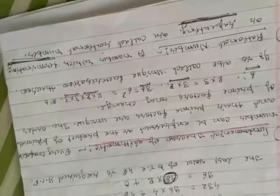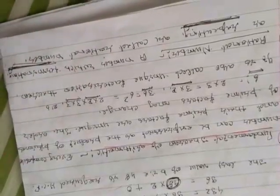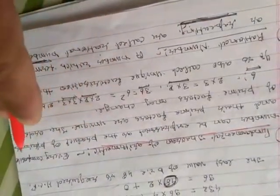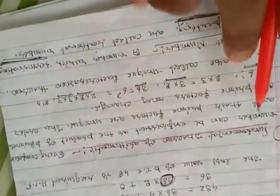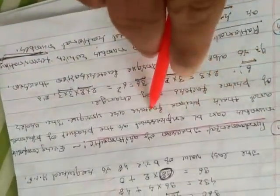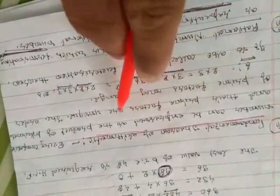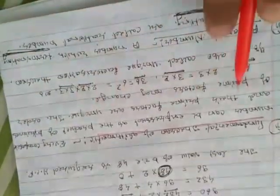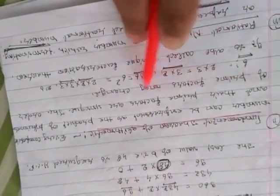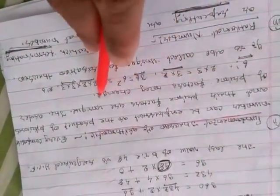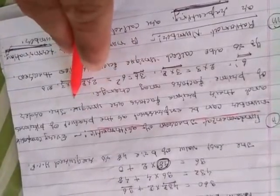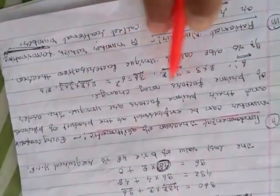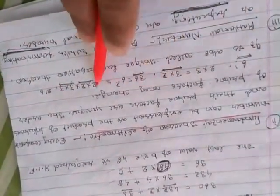Children, according to this theorem, it says that every composite number can be expressed as the product of primes and their prime factors are unique. The order of prime factors may change.